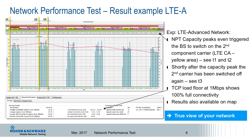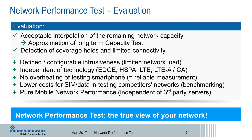The green color of the load floor is barely visible because it was only configured to one megabit per second, appearing as a straight line at the bottom of the screen. But the example shows 100% full connectivity for this TCP load floor. This is what we call the true view of your network — measuring the remaining capacity in the running network and measuring full connectivity. The evaluation achieves a feasible approximation of long-term capacity and can detect coverage holes or limited connectivity. So the two main points — capacity and coverage — are both measured.